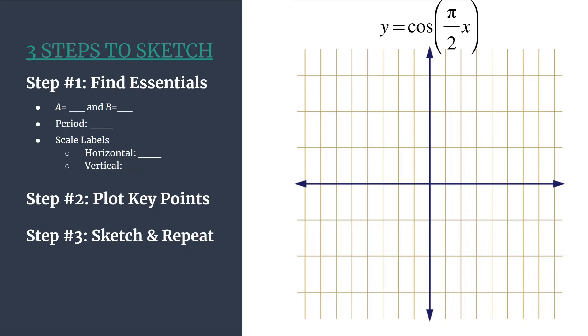So we have our trusty outline. We have our grid. Remember that this method is for our unshifted cosine graphs. They're in the form y equals a cosine bx. You can see that this graph is in that form.